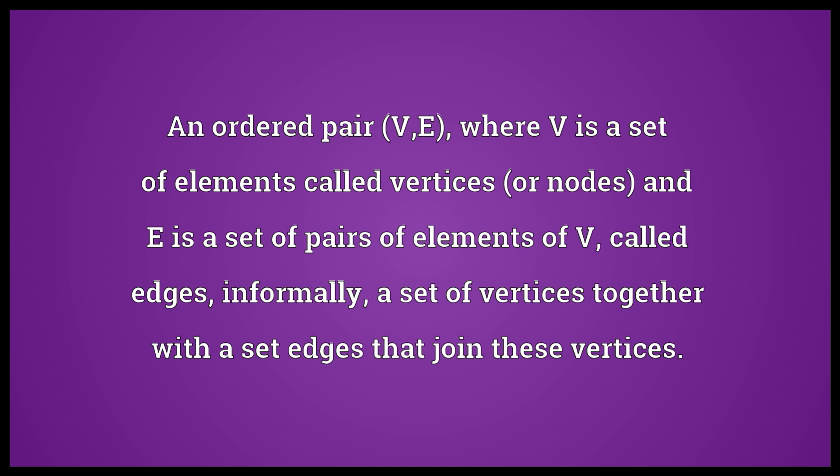An ordered pair (V, E), where V is a set of elements called vertices or nodes and E is a set of pairs of elements of V, called edges. Informally, a set of vertices together with a set of edges that join these vertices.